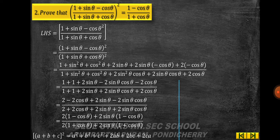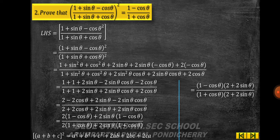Using the (a + b + c)² expansion to confirm, taking (1 − cosθ) common from the numerator gives (1 − cosθ)(2 + 2sinθ), and taking (1 + cosθ) common from the denominator gives (1 + cosθ)(2 + 2sinθ). The (2 + 2sinθ) cancels, giving (1 − cosθ) / (1 + cosθ), which is the right-hand side.